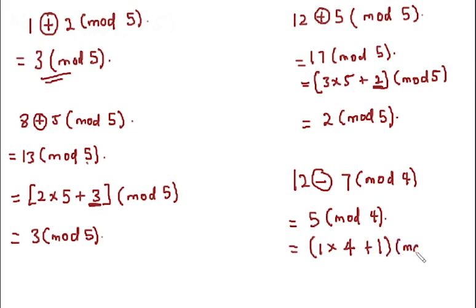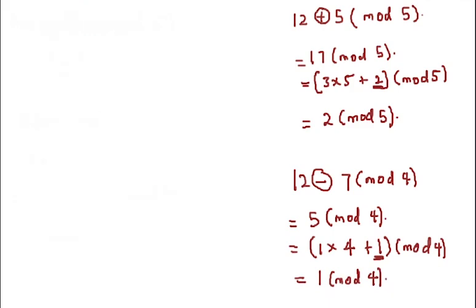And then we write mod 4. So this is equal to, we take this value here, which is our remainder value. So this is 1 mod 4.